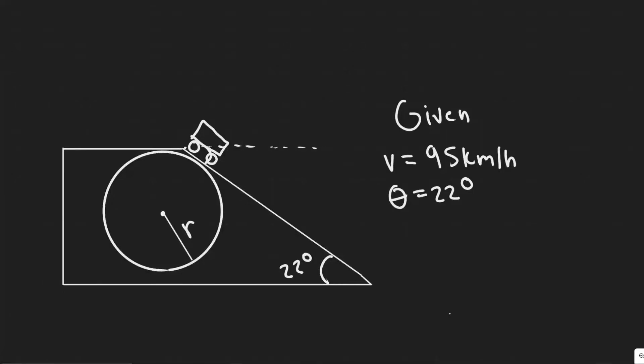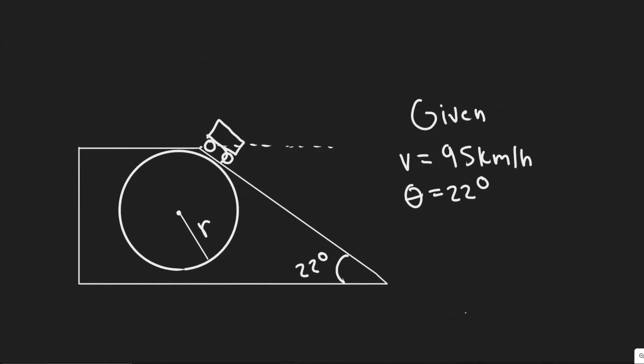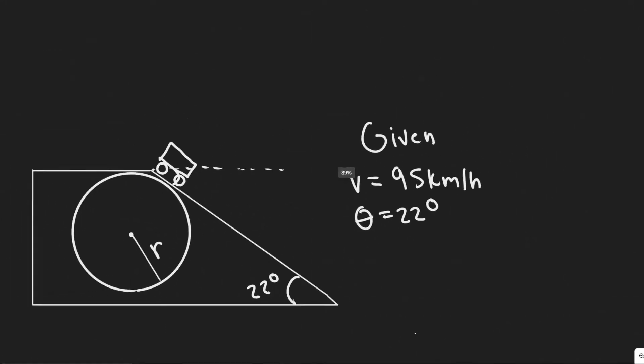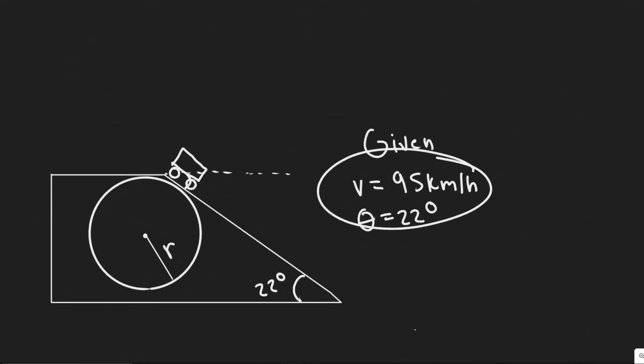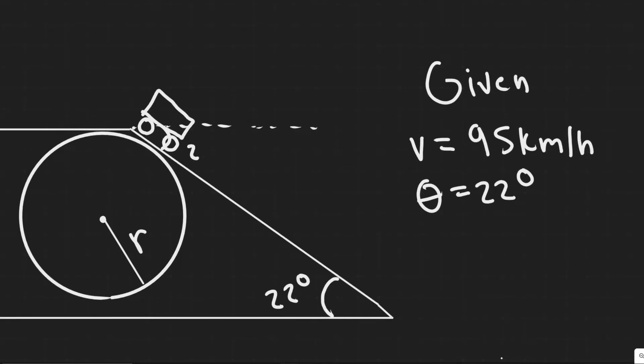Okay, so in this problem we're told the design of a new road includes a straight stretch that is horizontal and flat, but that suddenly dips down a steep hill at 22 degrees. The transition should be rounded with what minimum radius so that cars traveling 95 kilometers per hour will not leave the road. So we're given some information here. We're given that the velocity of these cars at this point are going to be 95 kilometers per hour. We're also given the angle decline right here. So we know this angle that they're going to drop is 22 degrees.